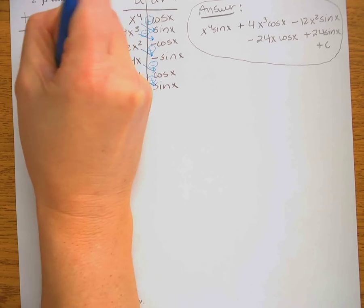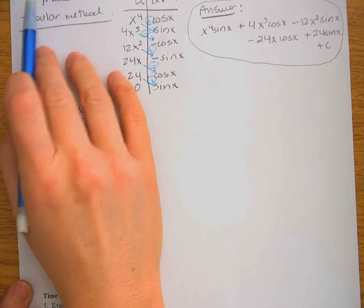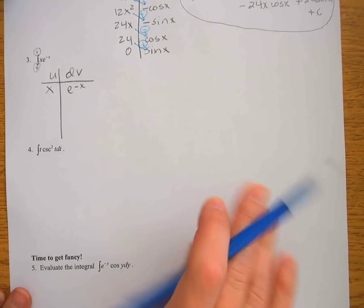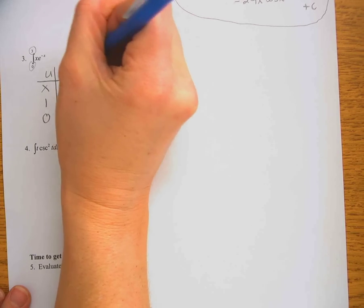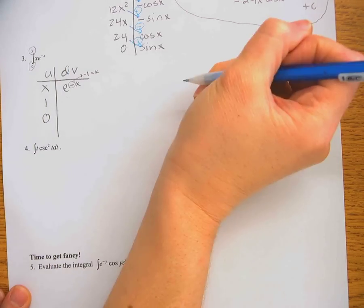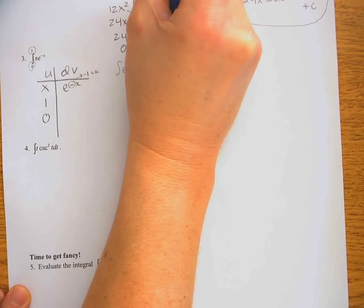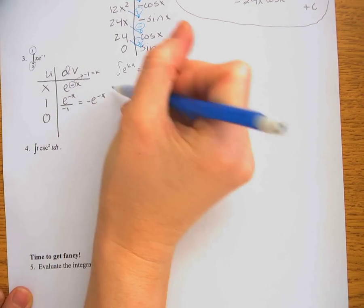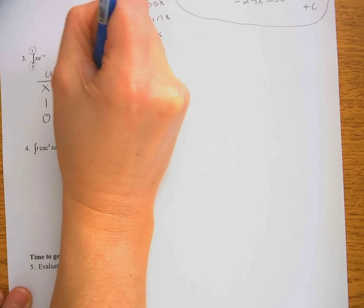Let u = x (polynomial before exponential by LIPET) and dv = e^(−x)dx. Derivatives of x: 1, then 0. For the antiderivatives, treat the exponent −x as k = −1; the antiderivative of e^(kx) is e^(kx)/k. So antiderivative of e^(−x) = e^(−x)/(−1) = −e^(−x), and antiderivative of −e^(−x) = e^(−x). Signs alternate: plus, minus.